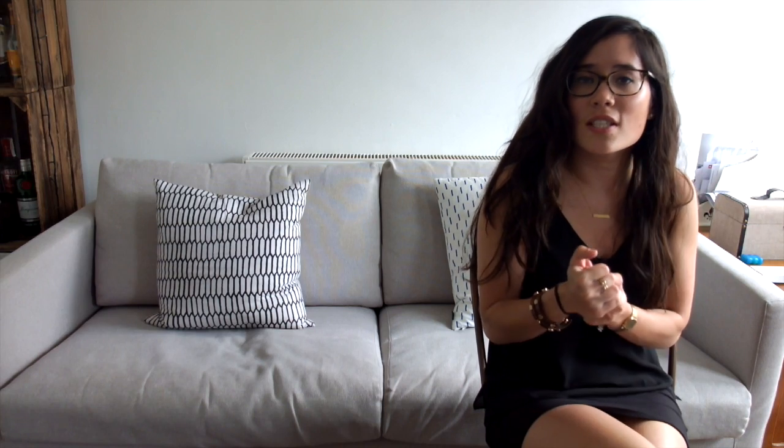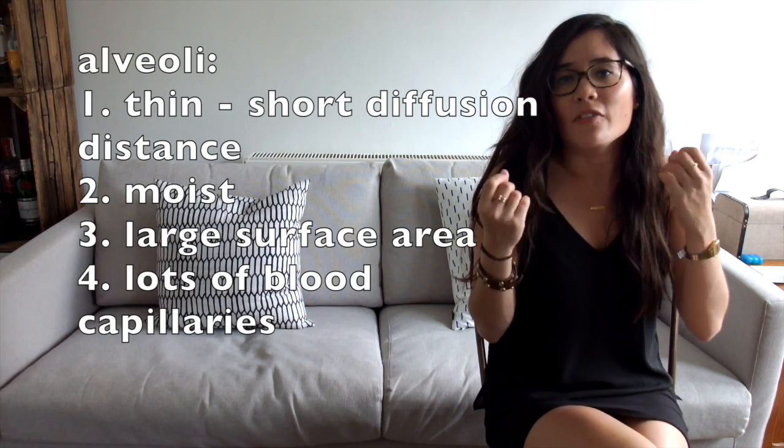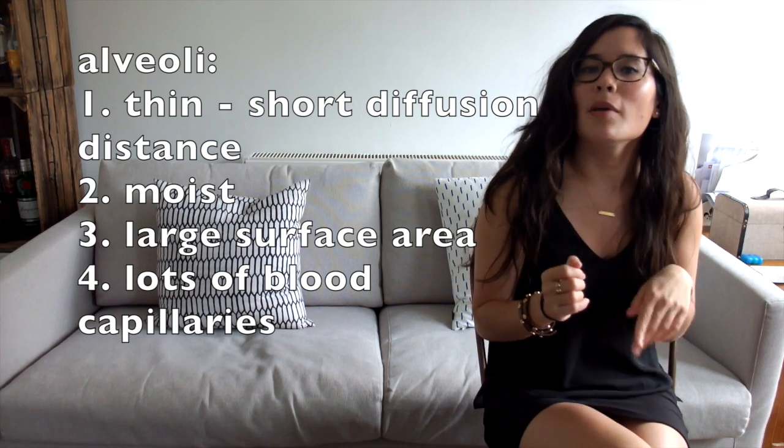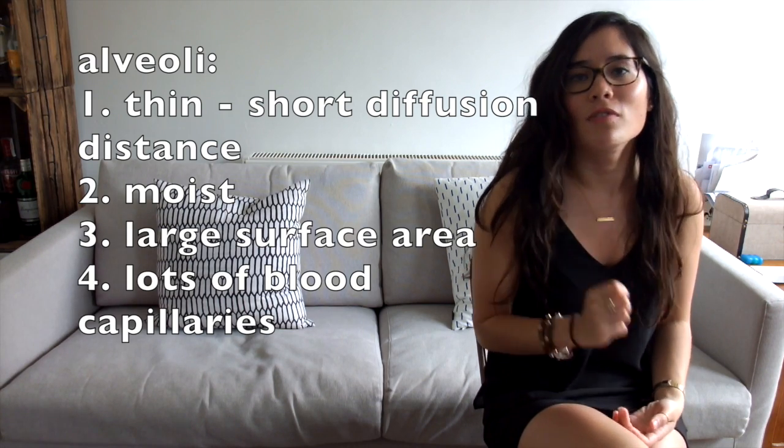That occurs by diffusion. So if we take oxygen, remember diffusion is the net movement of gas from an area of high concentration to low concentration so that will be oxygen moving from inside the alveoli through its walls into the capillaries and that is diffusion. Remember that the alveoli are adapted to maximize the amount of gas exchange that can take place. They're very thin, one cell thick so there's a short diffusion distance, they're moist, they have a very large surface area and they have a plentiful supply of blood capillaries so those are four marks for you right there.